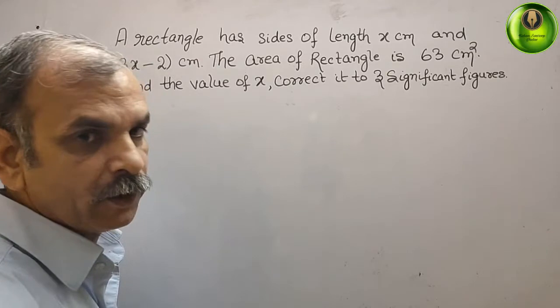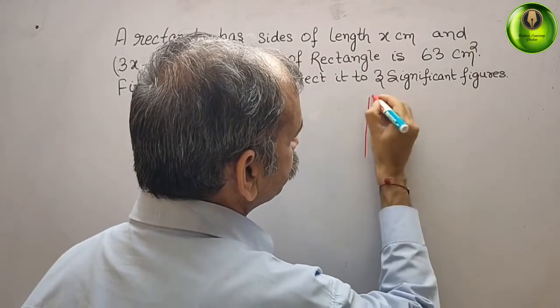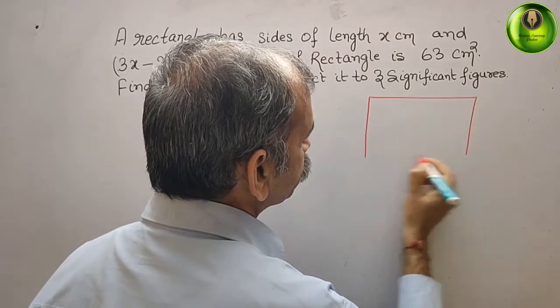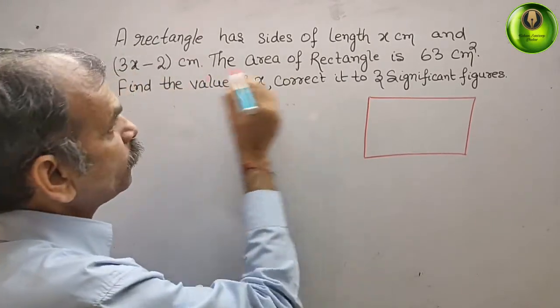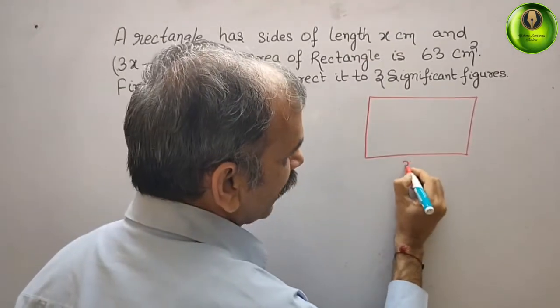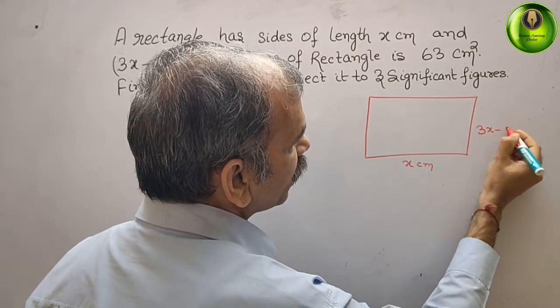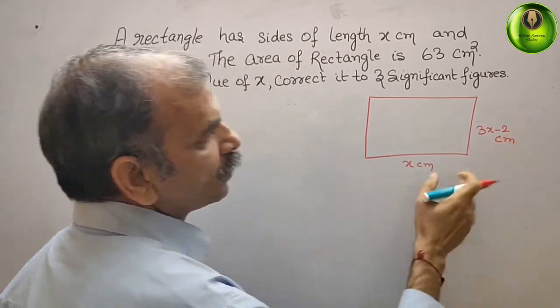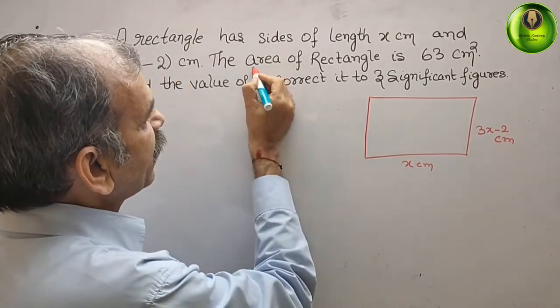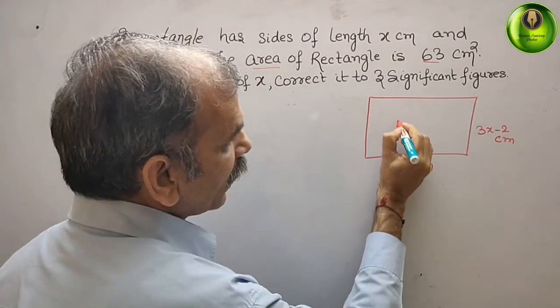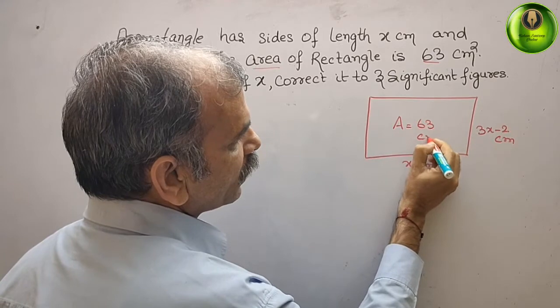Now, first we will draw. Suppose this is your rectangle. The side they have given you x. So this is your x centimeter and this is your 3x minus 2 centimeter. They have given you this. Another thing they have given the area is 63. That means area is 63 centimeter square.